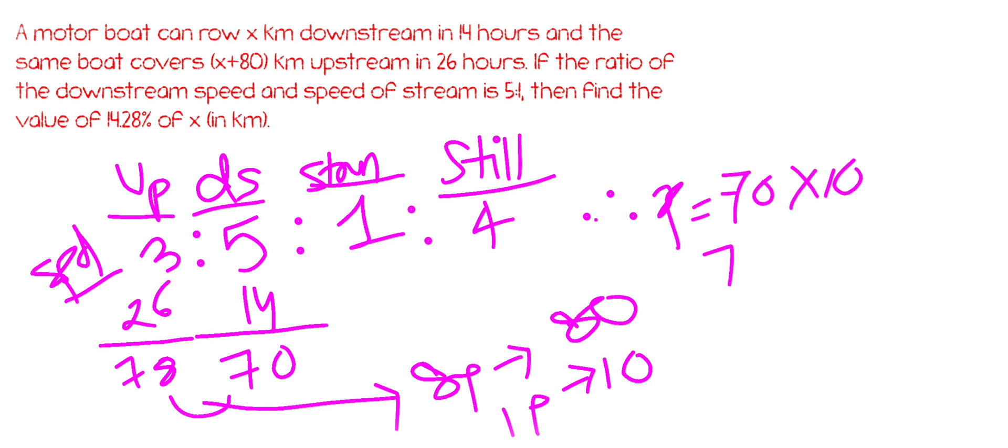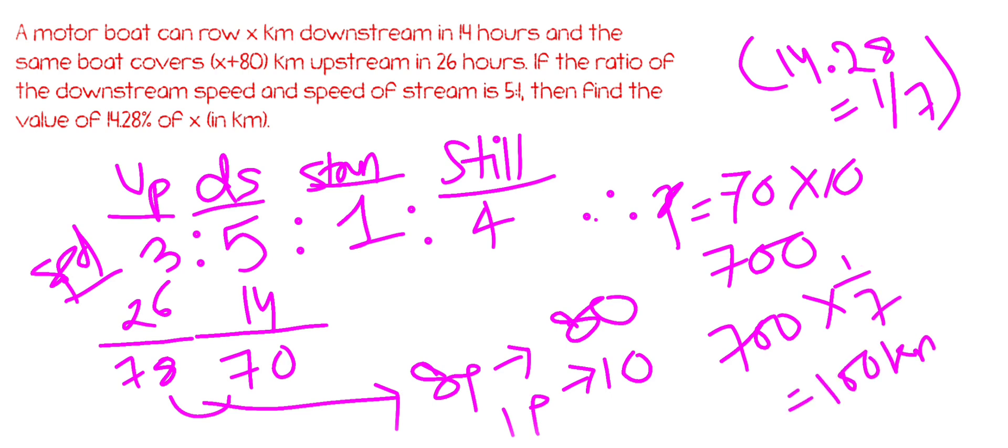But in the question it is asked about 14.28 percent of x. So 14.28, as we all know, 1 by 7 of 700. 1 by 7 will be 100 kilometers.